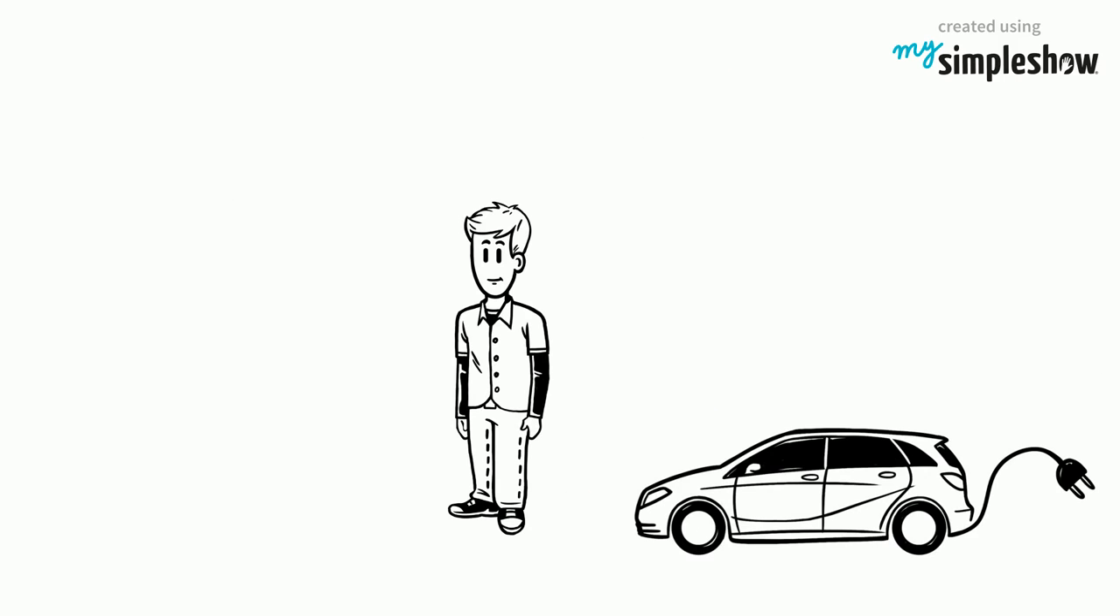Josh buys an electric car to lessen greenhouse gas pollution. He also decides to start walking instead of driving whenever possible and encourages his friends and family members to do so too.